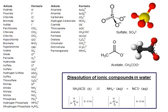One reason it's important to remember these anions is that when you see a dissolution reaction, it's important to work out what species are going to form upon dissolution. For example, the compound NH4NCS consists of two discrete species: the ammonium cation and the thiocyanate anion.